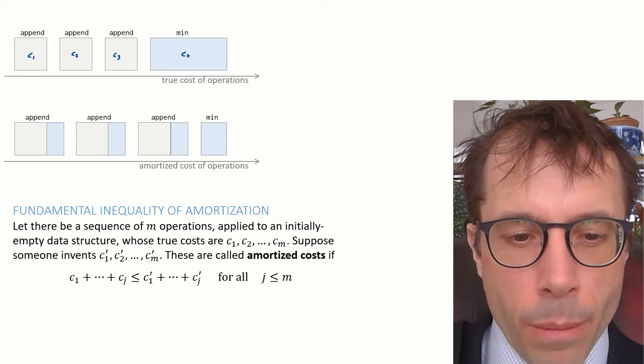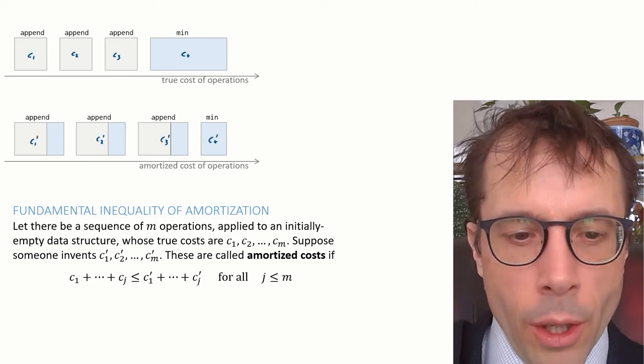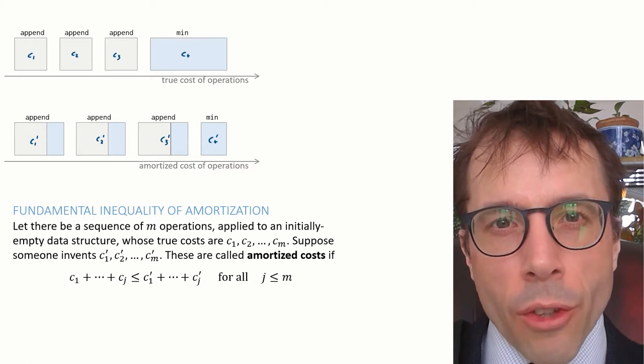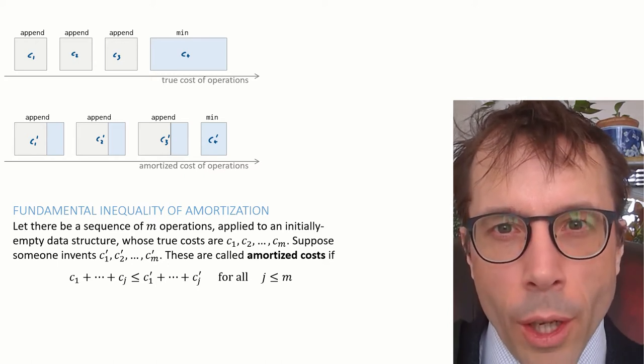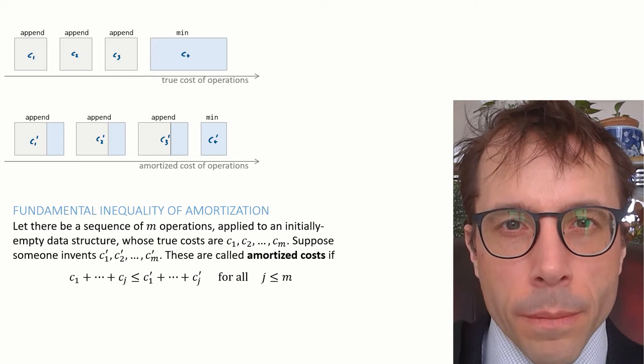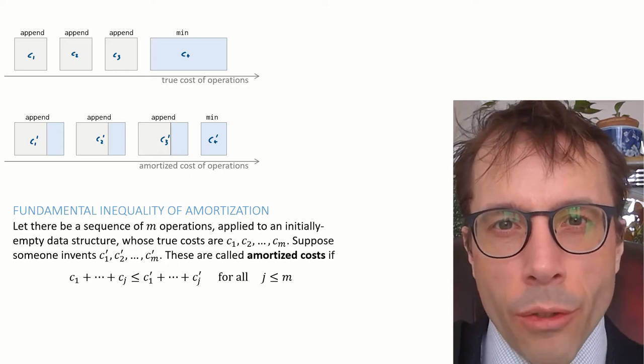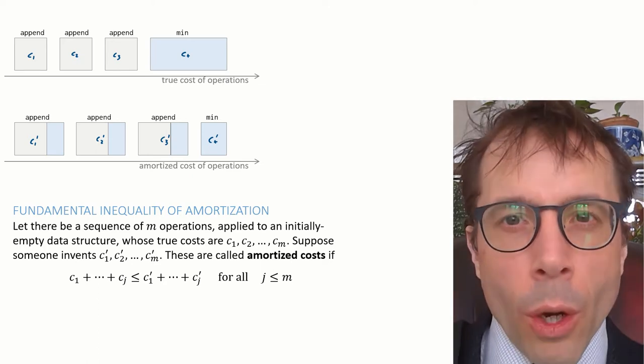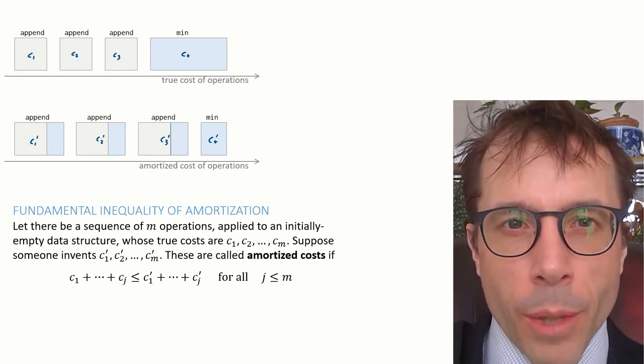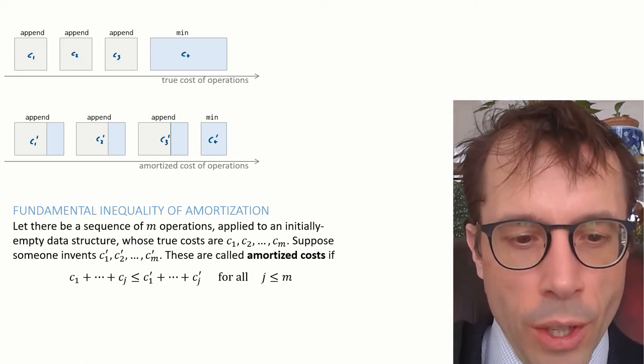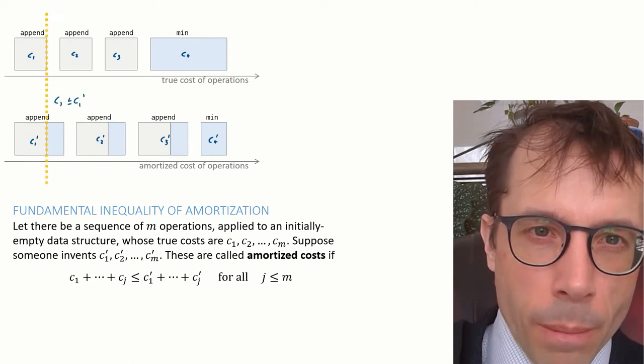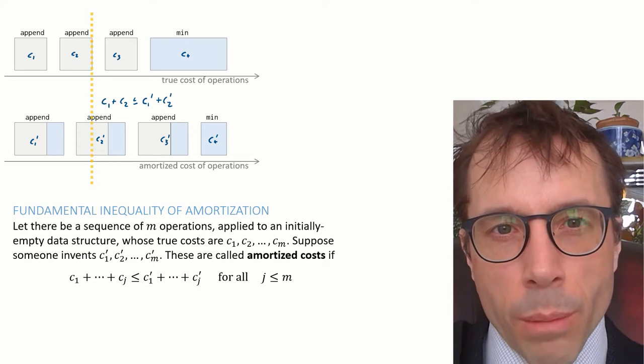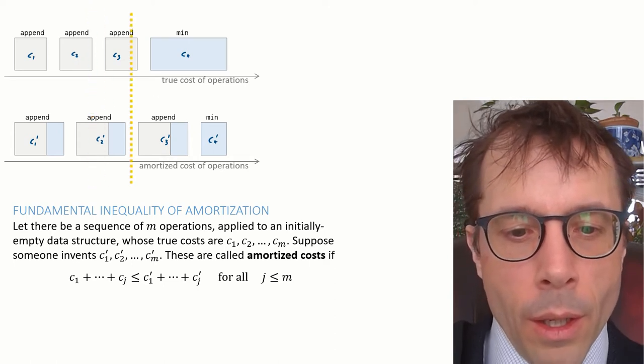The bottom diagram shows a different set of costs, call them c1' up to c4', which we got in this case by taking the c4 cost and splitting it among the first three operations. It doesn't matter how we came up with these c1' up to c4' costs that we invented, for now. All that matters is that there are no late payments, in the sense that c1 is less than or equal to c1', c1 plus c2 is less than or equal to c1' plus c2', and so on.